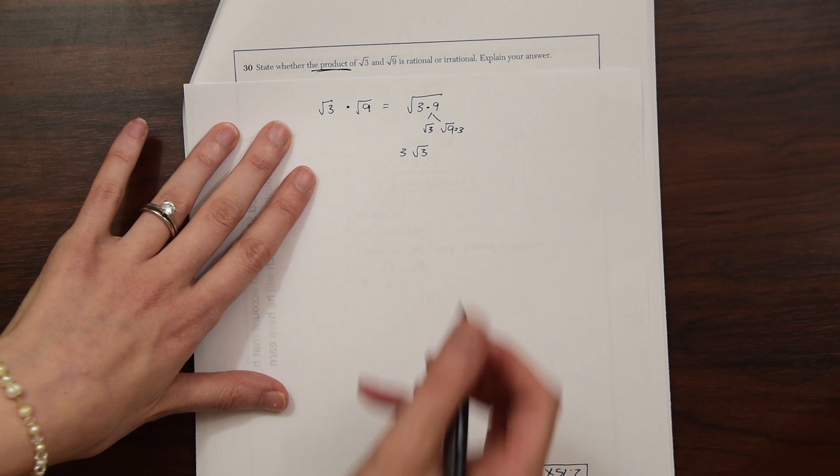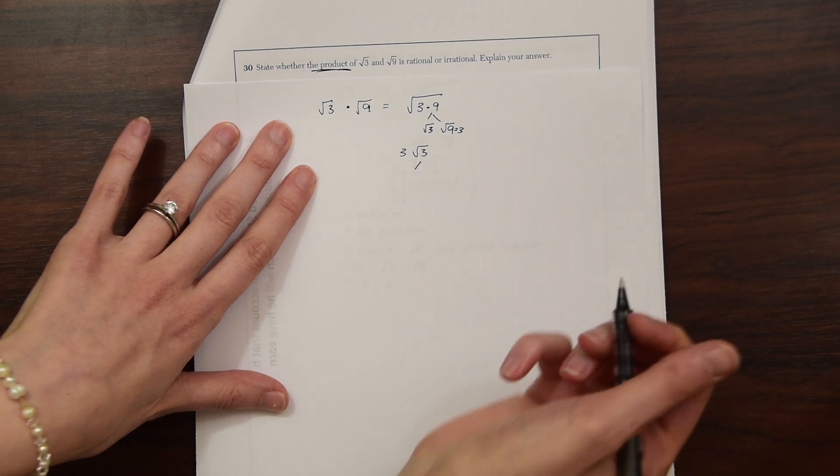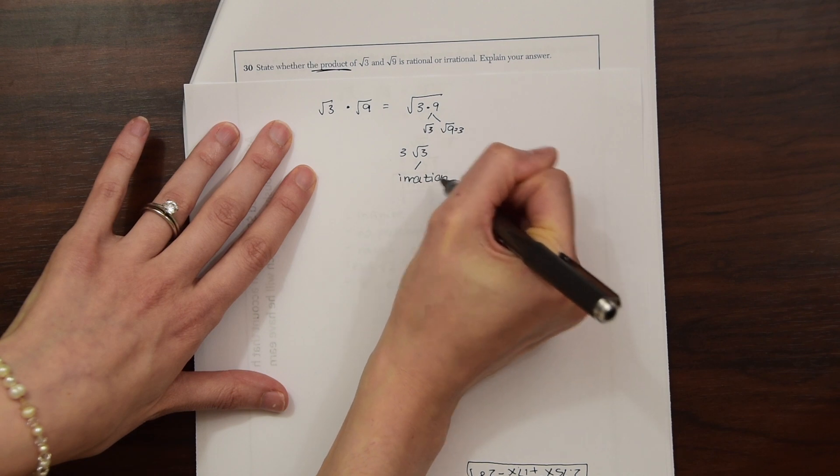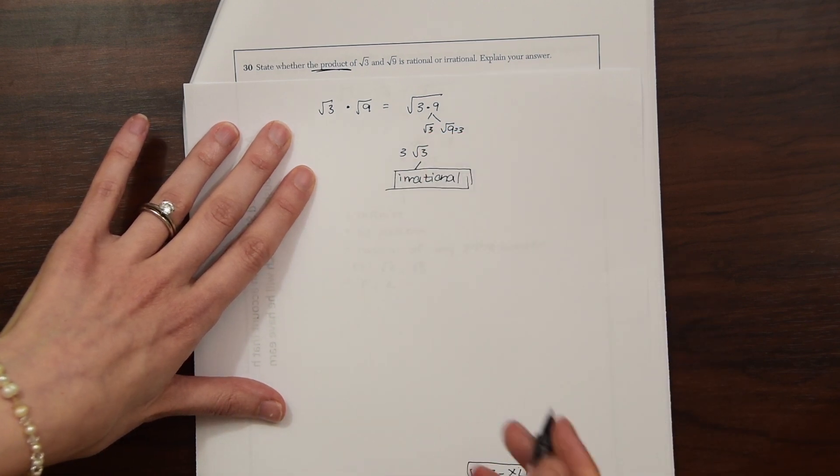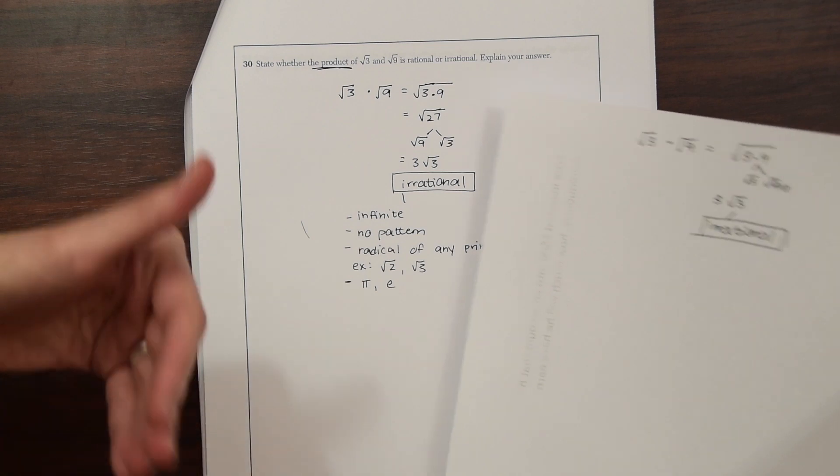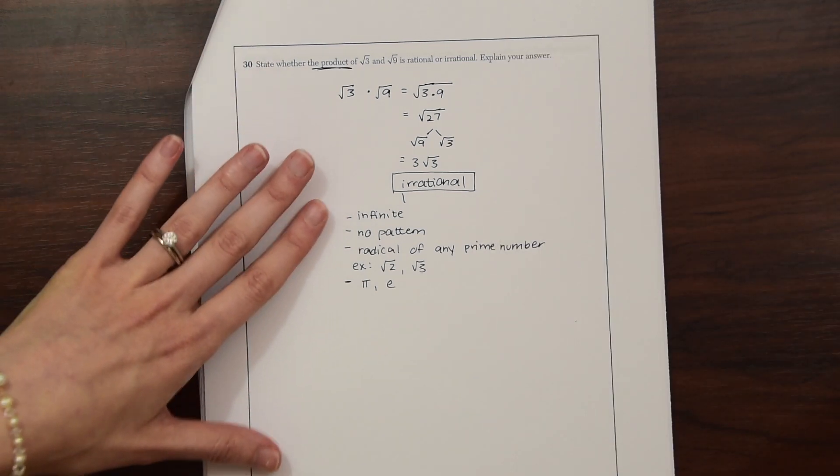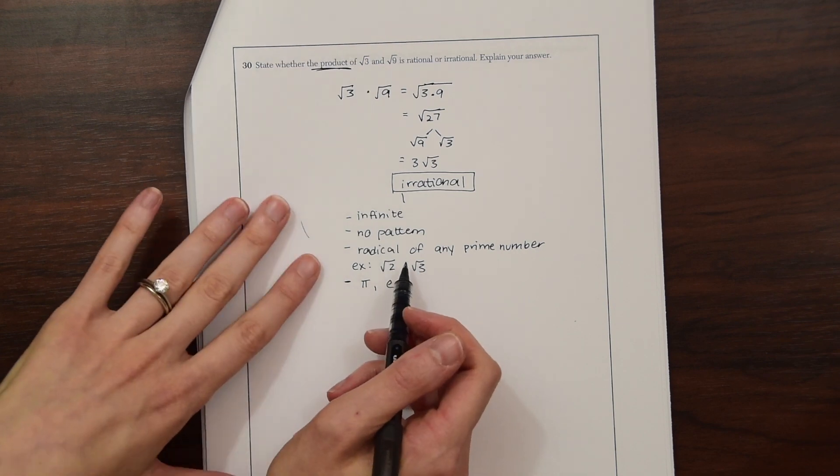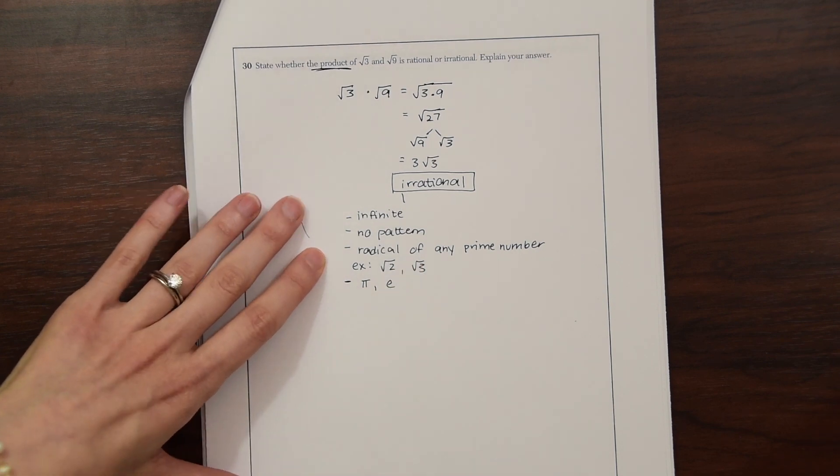And since there is a radical 3 in here, we know that this is irrational because it follows all of these properties right here. So an irrational number is infinite and there is no pattern. And it's an irrational number if a radical is equal to any prime number.